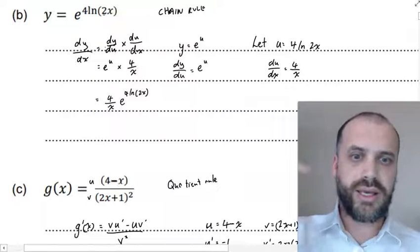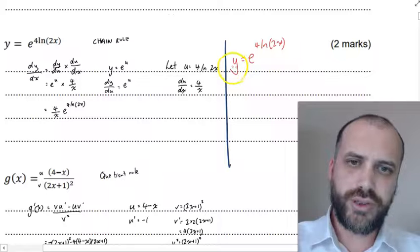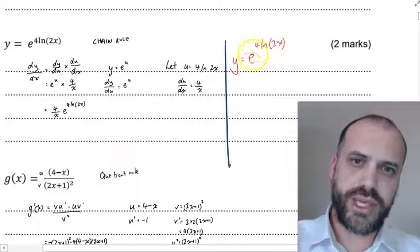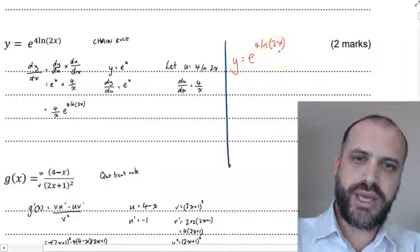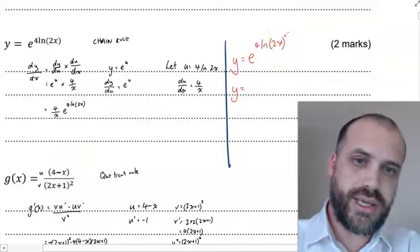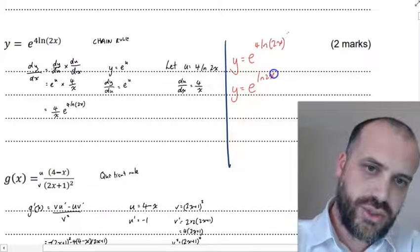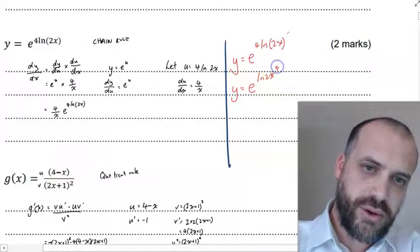I was called out in the comments because I should have seen this e and this ln and immediately spotted that e to the power of an ln, I'm going to be able to simplify that. So the question is asking us to derive y equals e to the 4 ln 2x. Before I start deriving it, I can take that 4 there and take it up here to a power.